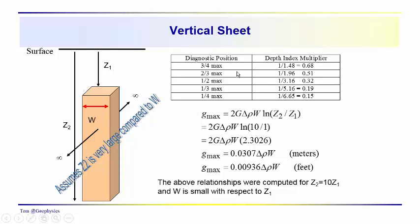And we get this logarithmic expression for Gmax. And again, we can go in there and calculate the depth index multipliers for the different diagnostic positions. This anomaly is also going to be a symmetrical bell-shaped type feature, and we would be able to differentiate it. It's actually going to fall off more gradually than the other two anomalies. So I haven't included a comparison here, but that might be something that you could do. Put these anomalies into a spreadsheet and go through your own comparisons to see how they fall off.